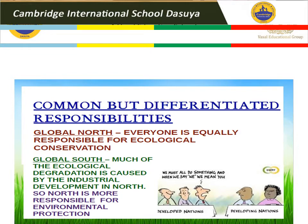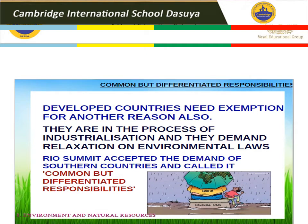Developed countries need exemption for another reason also — they are in the process of industrialization and they demand relaxation of environmental laws. This argument was accepted by the Rio Declaration at the Earth Summit 1992, and it is called the Principle of Common but Differentiated Responsibilities.